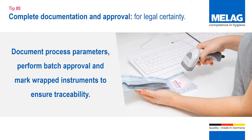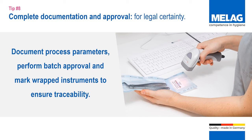Tip number eight: performing a complete documentation and approval procedure for legal certainty. Testing and tracking the spread of the virus has increased. Against that backdrop, providing evidence of proper instrument decontamination has become a hot topic for clinics and hospitals. The documentation of reprocessing instruments and FFP masks includes the collection of process parameters controlled by the washer-disinfector and autoclaves, the batch approval using a documentation form or software solution, and the marking with a batch number. Only if you cover these three areas reliably can you achieve a traceable documentation process.